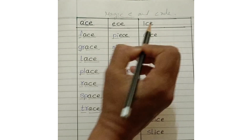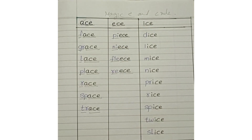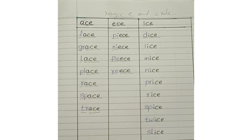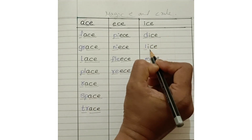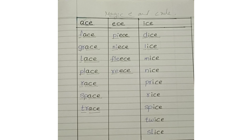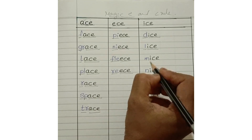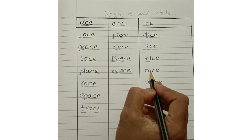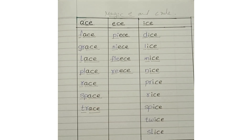ICE makes the sound 'ice'. D + ICE: dice. L + ICE: lice. M + ICE: mice. N + ICE: nice.